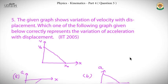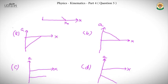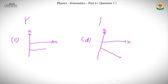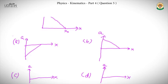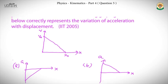The next question appeared in the JEE 2005 paper and is a somewhat tricky problem. We are given a velocity versus displacement graph. The question asks: which of the following graphs correctly represents the variation of acceleration with displacement? Importantly, this is a velocity versus displacement graph, not a velocity versus time graph, so direct methods will not be applicable.